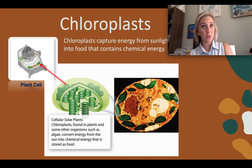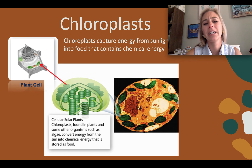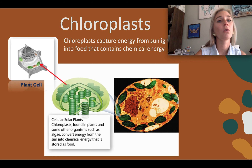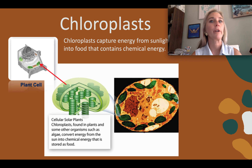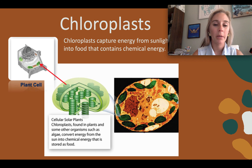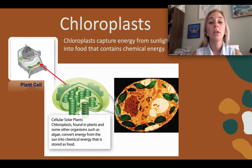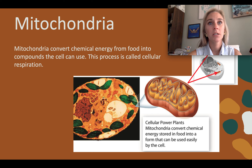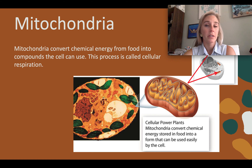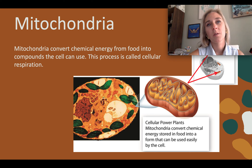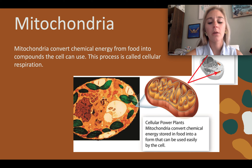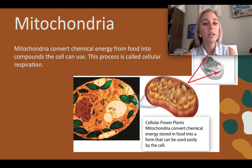Chloroplasts are only found in plant cells and organisms like algae — animals don't have chloroplasts. They can be referred to as solar collectors because, in the process of photosynthesis, plants convert solar energy into food molecules or chemical energy. Mitochondria carry out cellular respiration, converting energy from food into a form that cells can use. They are found in all eukaryotes — a common misconception is that only animals have mitochondria, but plants have them too.